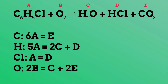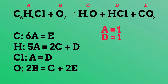Now that we have completed our equations, let's see which ones we can use to start our solving process. The chlorine equation, which is A = D, looks very simple. So we will assign variable A equal to one; therefore D also equals one. We can now start the process of solving for these variables.